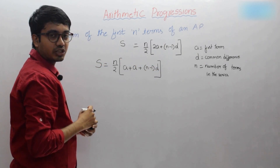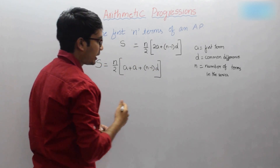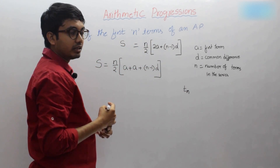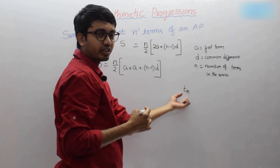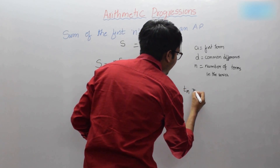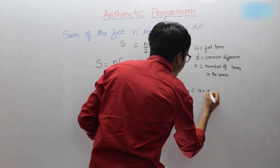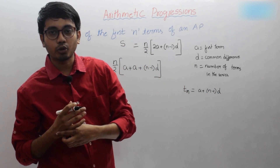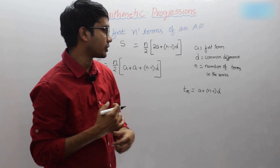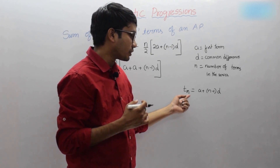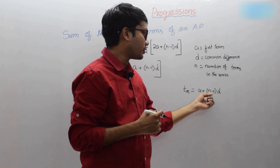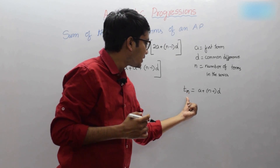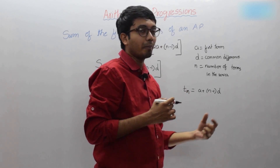In my previous session, I taught you that for finding the nth term of an AP — represented as tn — the formula is a plus n minus 1 into d. For example, if you want to find the second term, you write t2, which is a plus 2 minus 1 into d. Similarly, any nth term can be found using this formula.